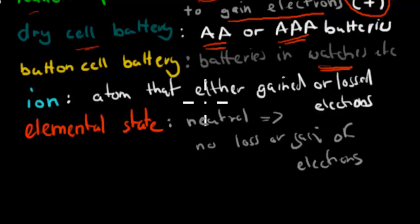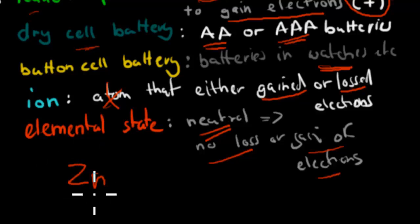An ion. That was an atom that either gained or lost electrons. So they're not an atom anymore if they're an ion because they've either gained or lost electrons. An atom has to be neutral. If it's in its elemental state, that means it's neutral. Which means it has not lost or gained electrons. So for example, zinc would be its elemental state. Whereas zinc 2+ would be the ion.